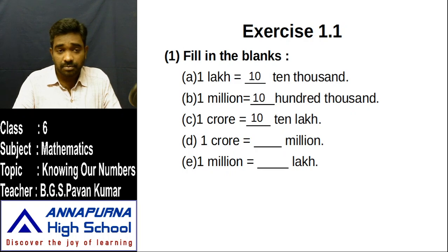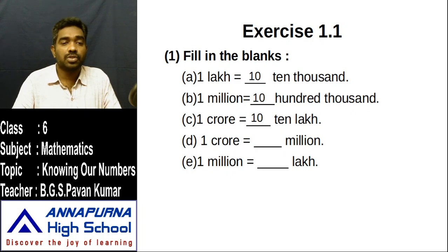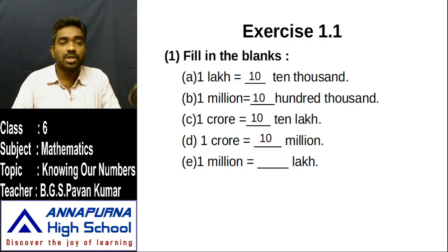Next one: one crore is equal to how many millions? In one crore, how many zeros are there? Seven zeros. In one million, how many zeros? Six zeros. The difference is one zero. Put one before — the answer is ten. So one crore is equal to ten million.